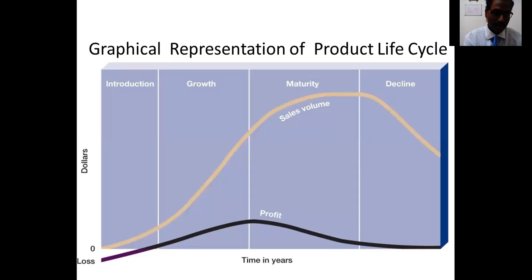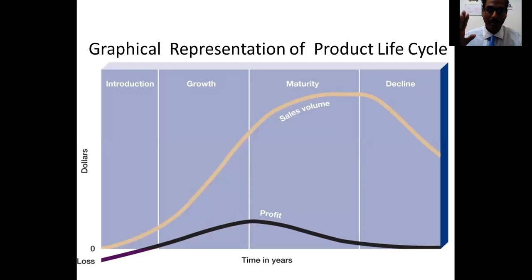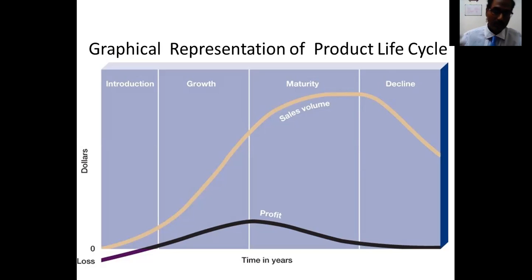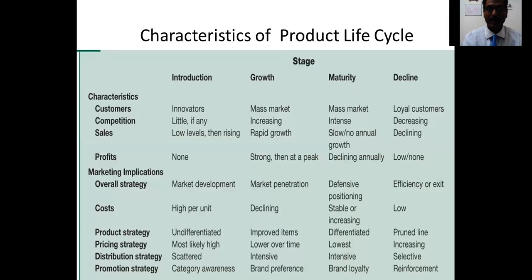Here is a graphical representation of the product life cycle. It shows two aspects: the profit of the product and the sales volume. In the introduction stage there is no profit at all, and sales gradually grow. In the growth stage there is rapid growth and increasing profit. In maturity, sales reach the maximum and profit initially goes up then starts declining. In the decline stage, both sales and profit decline extensively.